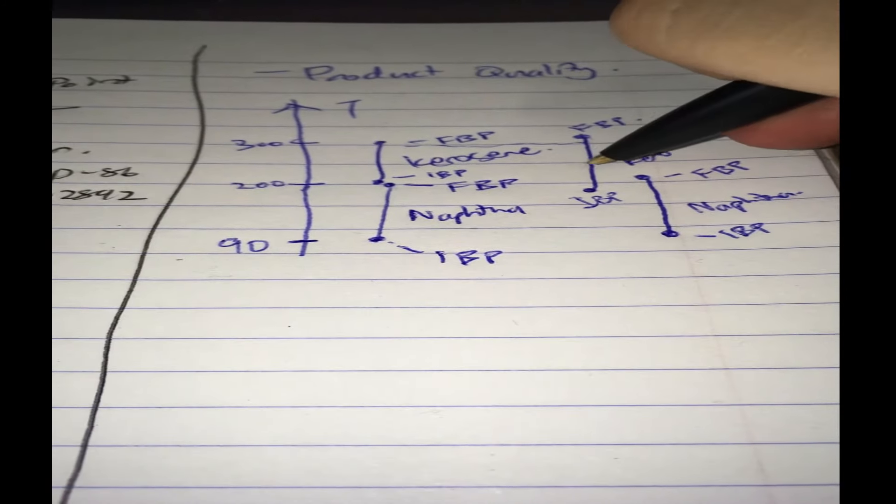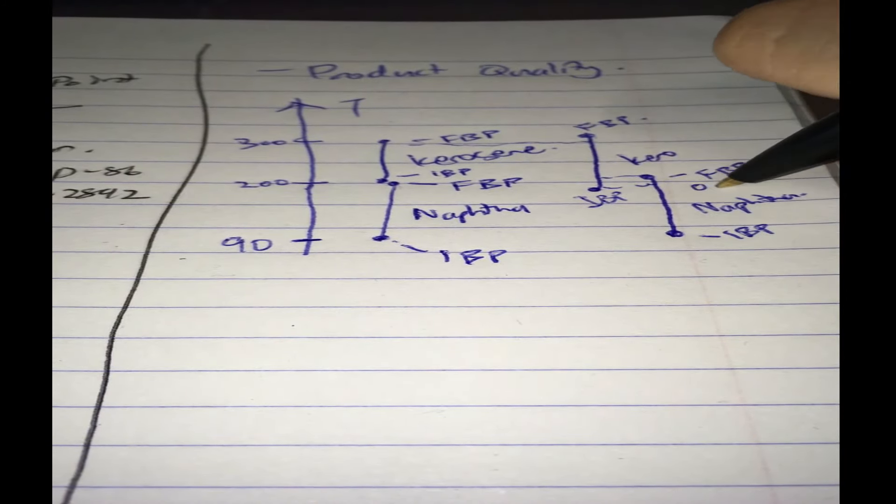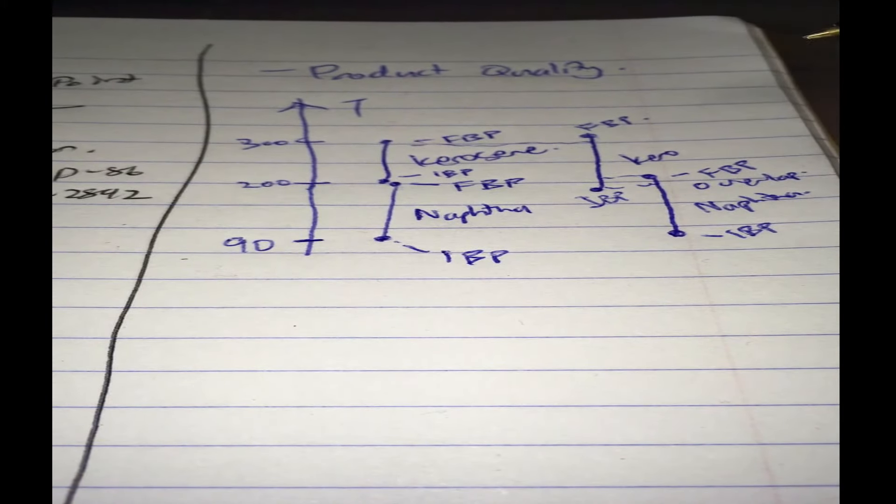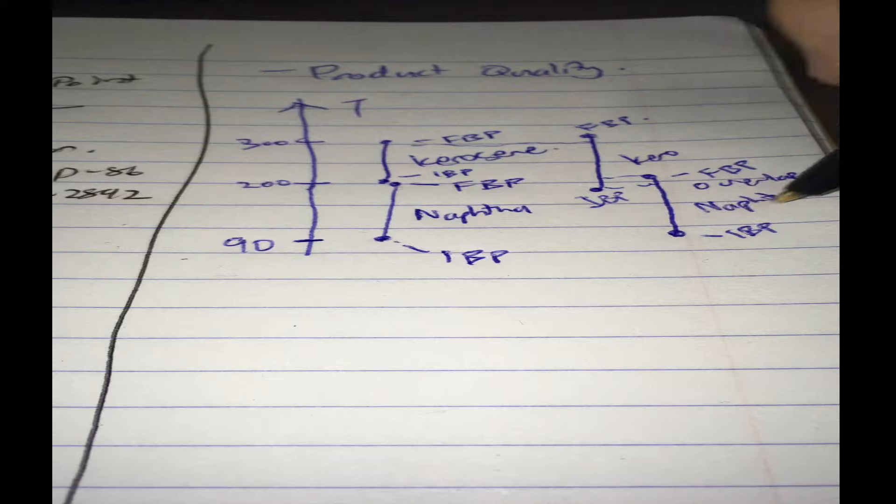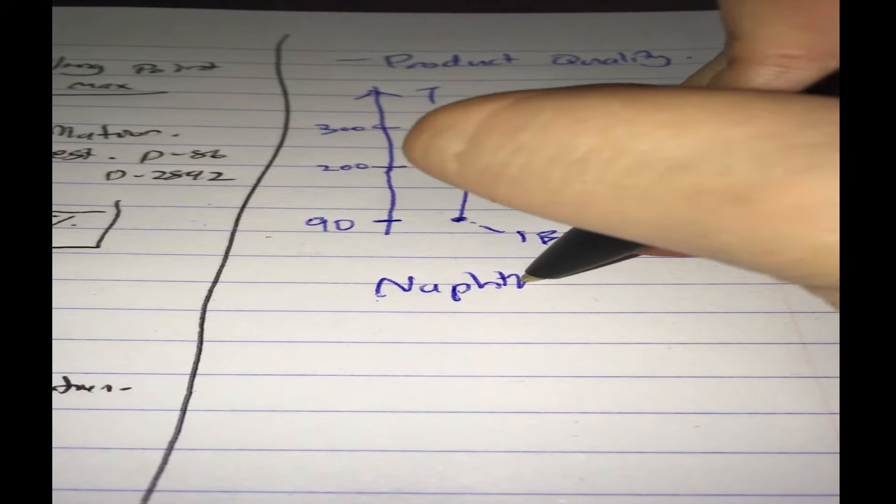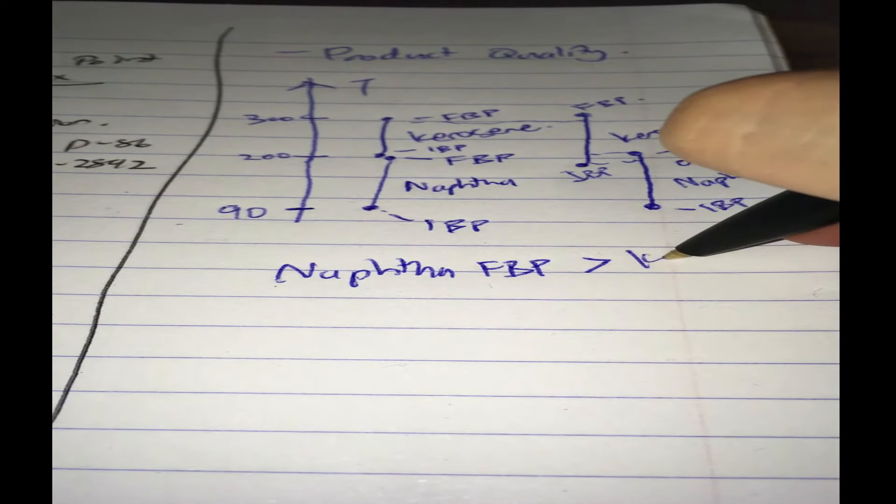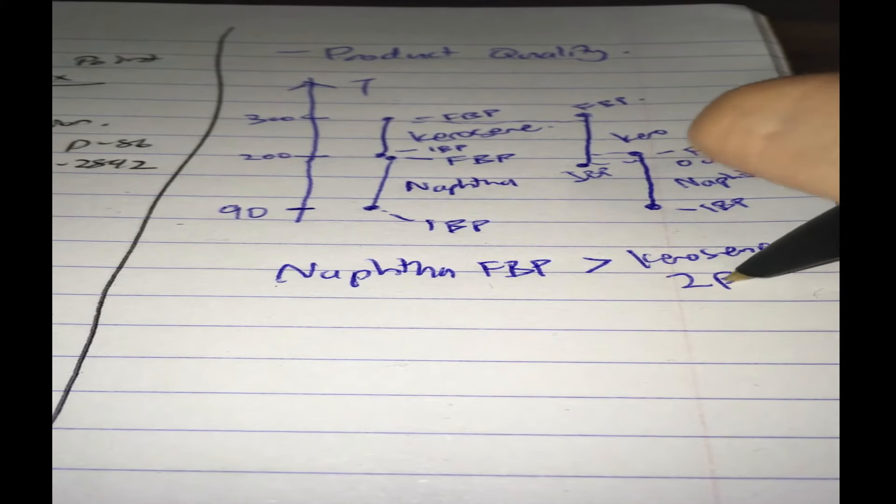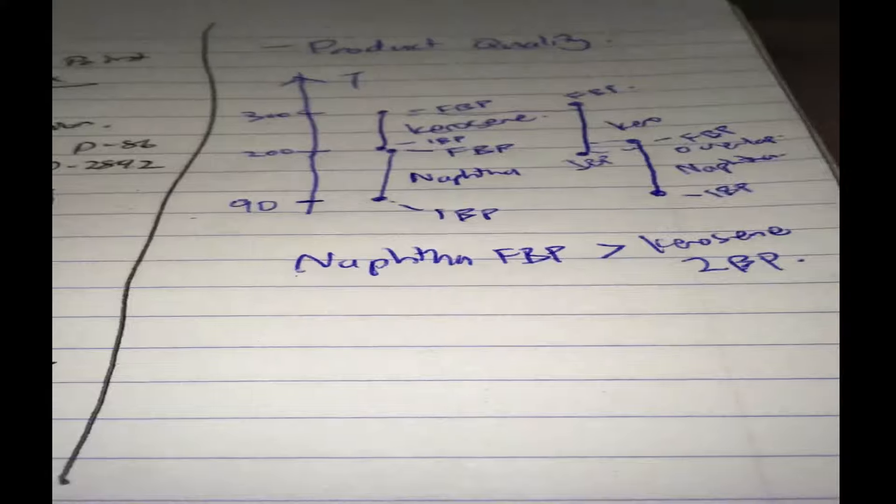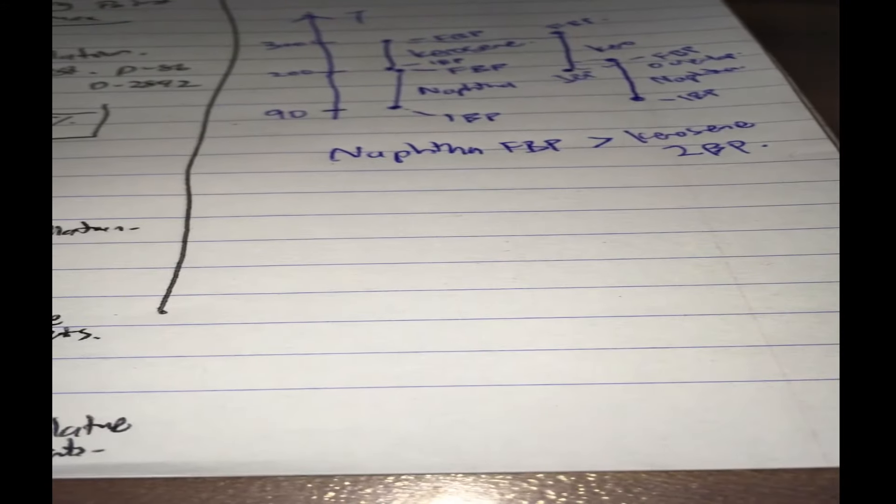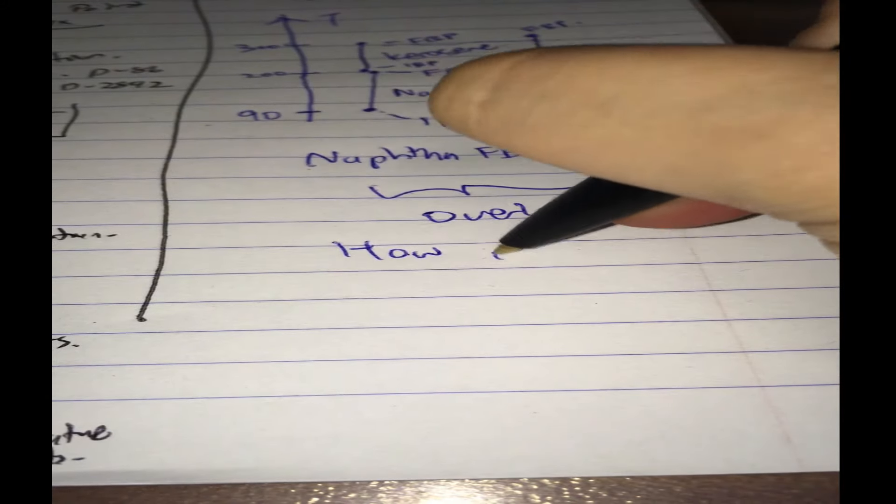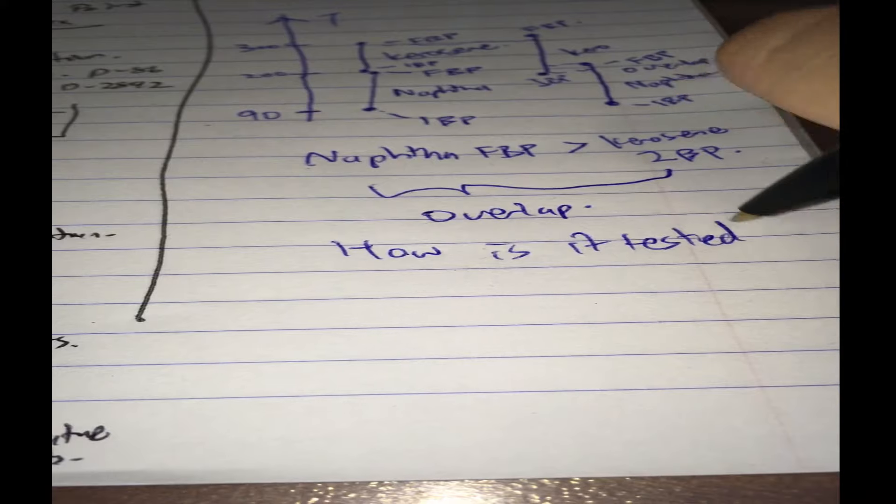So this is known as overlap - overlap in the boiling points. So the naphtha final boiling point is more than the kerosene initial boiling point. So I hope that concept sticks well in your head, you understand it. This is called overlap. Now how is it tested in industry?